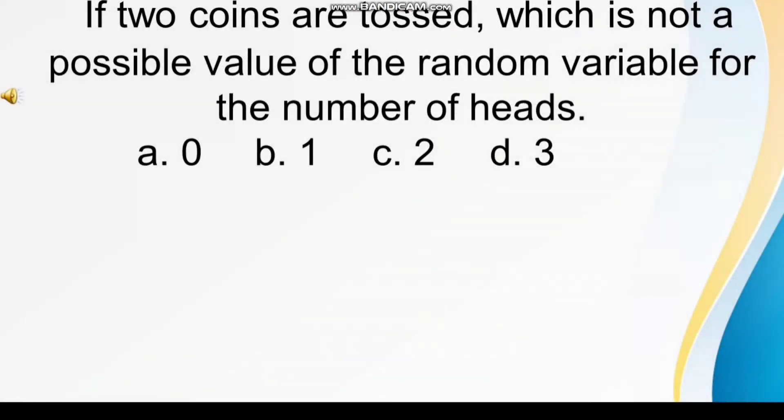If 2 coins are tossed, which is not a possible value of a random variable for the number of heads? A, 0, B, 1, C, 2, D, 3. Tandaan, number of heads, 2 coins. So, which is not a possible value? Your answer is...